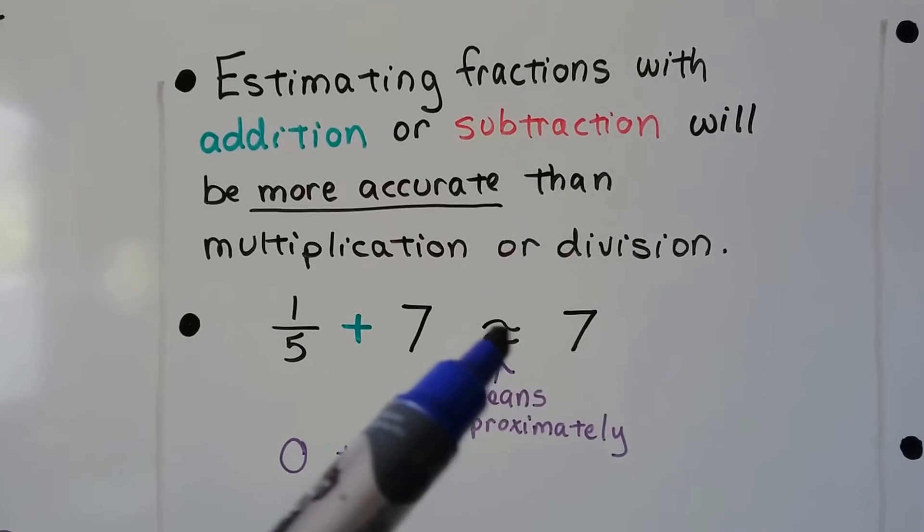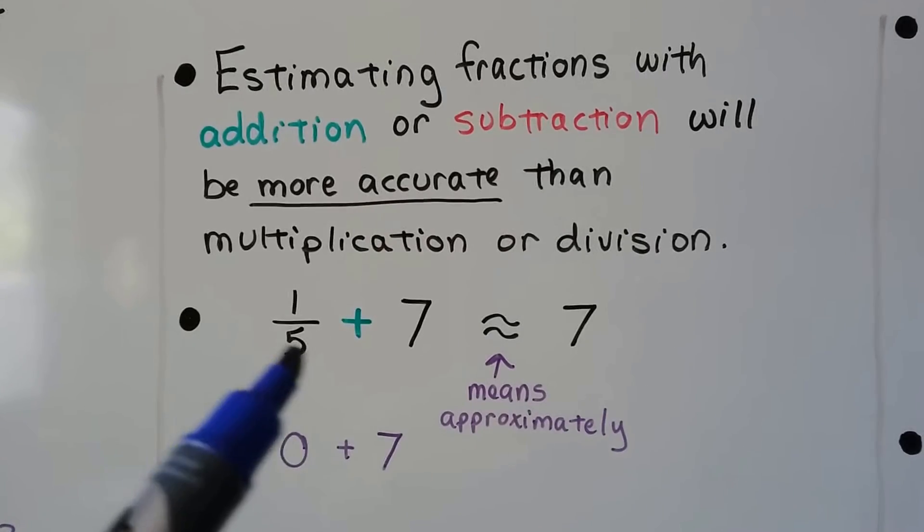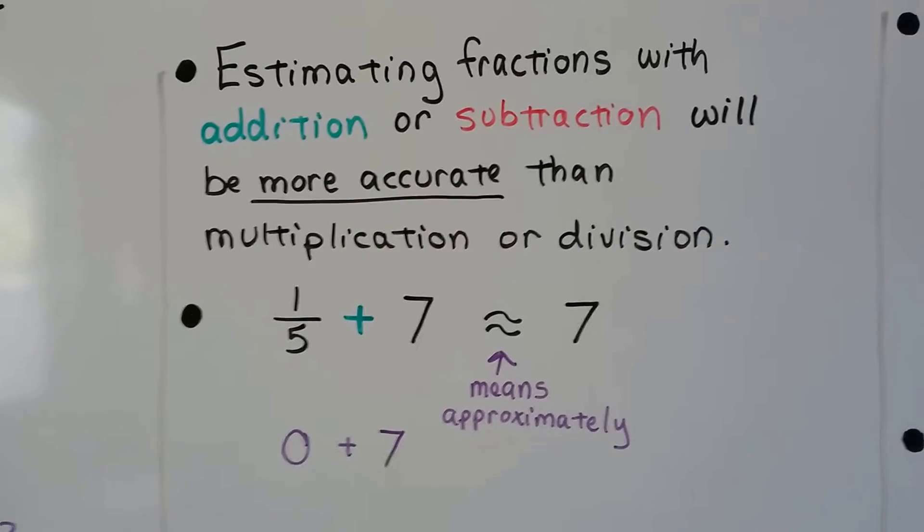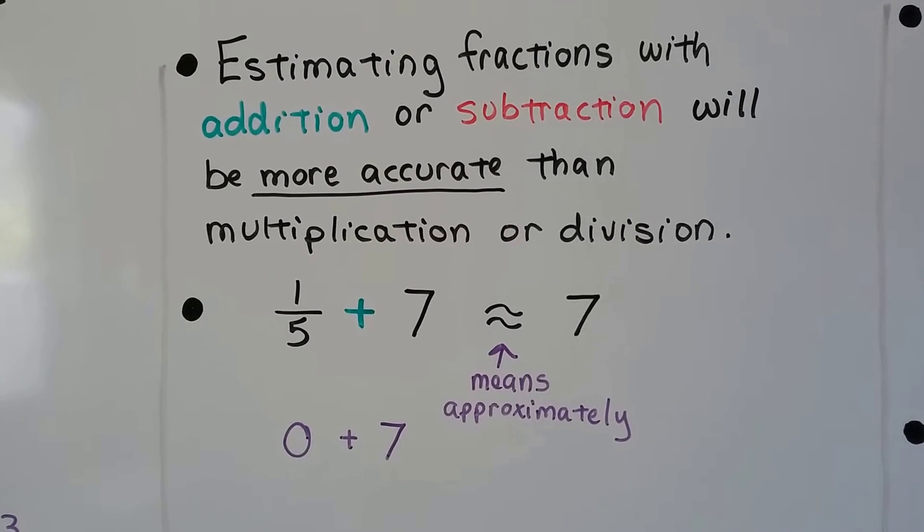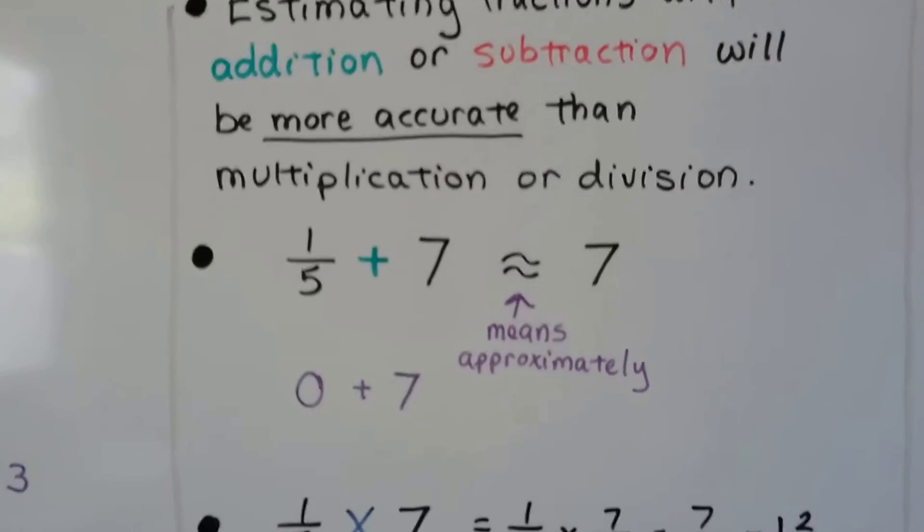The double wavy line means approximately. So 1 fifth plus 7 would be approximately 7. It would actually be 7 and 1 fifth, but it would round to 7.